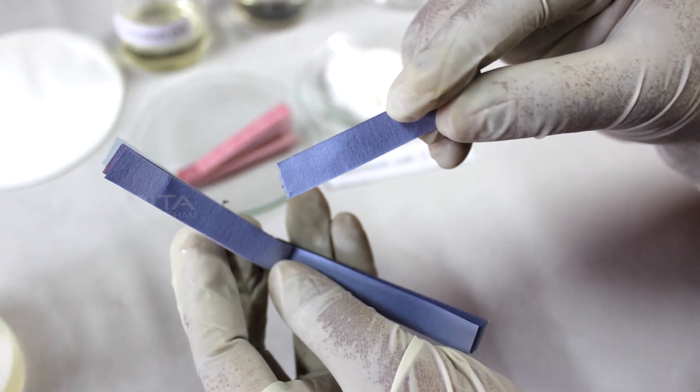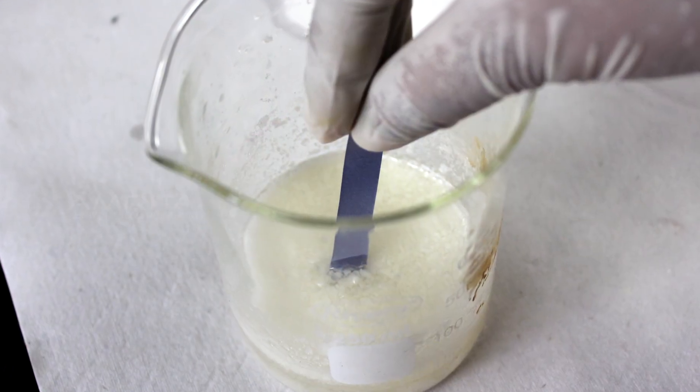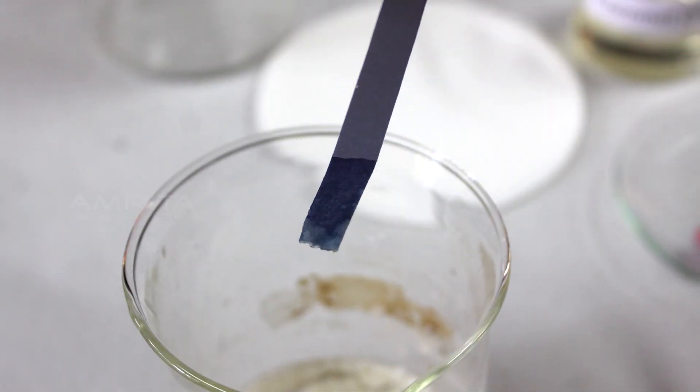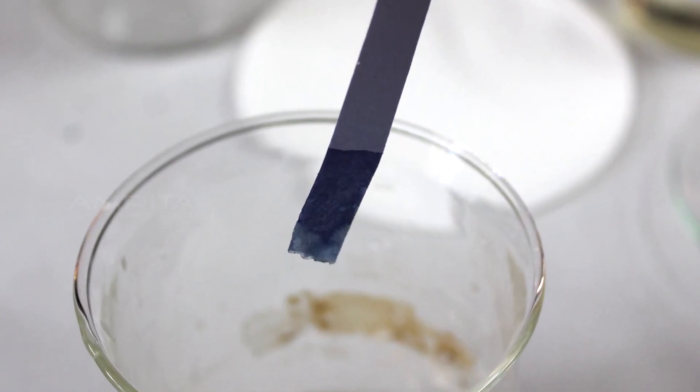Now take a blue litmus paper and dip it in the suspension. The colour of blue litmus paper remains the same indicating that soap suspension is not acidic in nature.